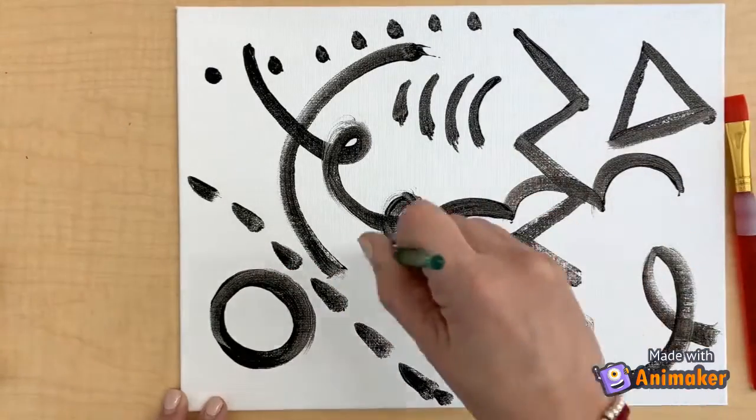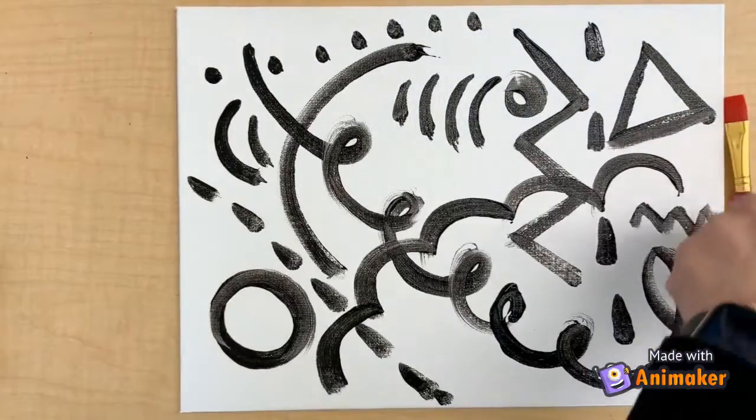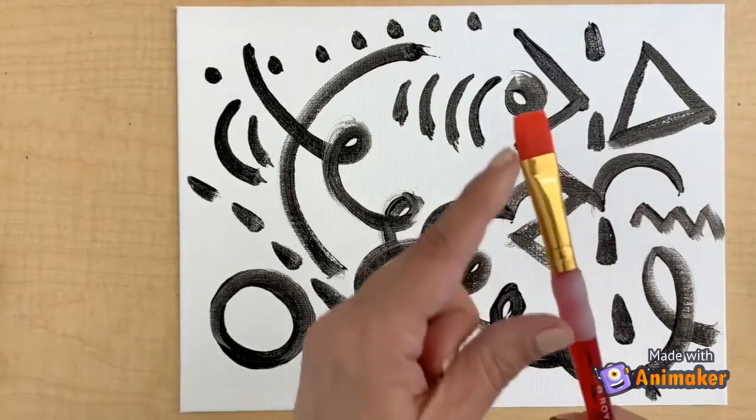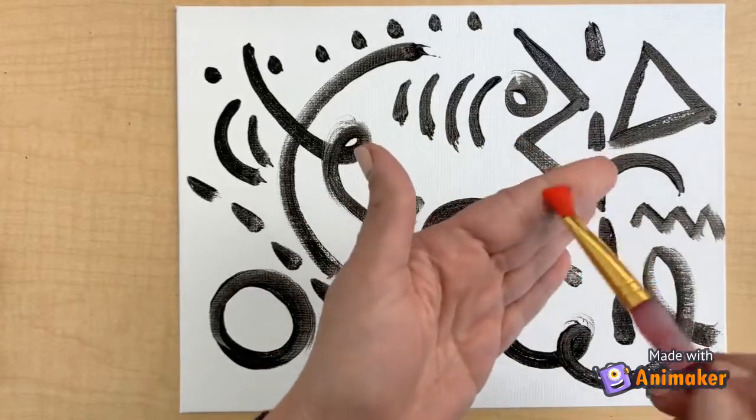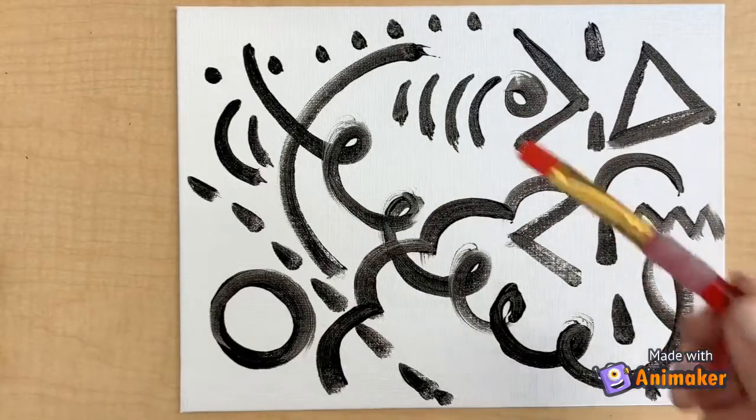I'm going to speed this up. Okay. So next, after, we're going to use our thicker brush to color in some of our shapes.